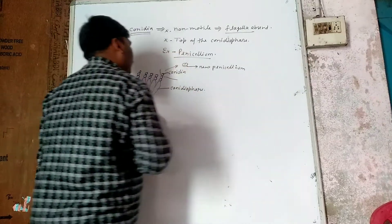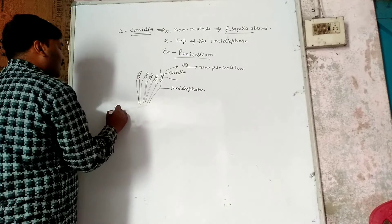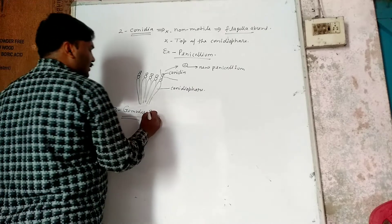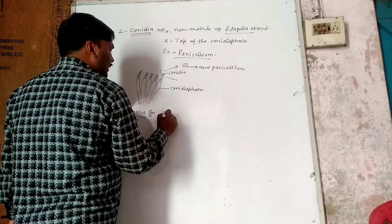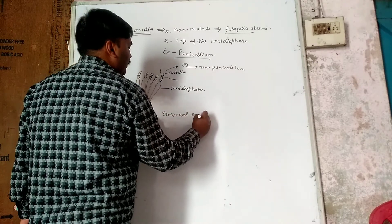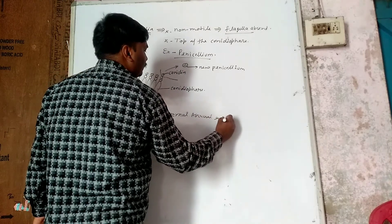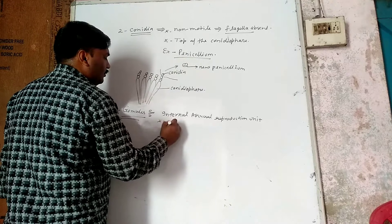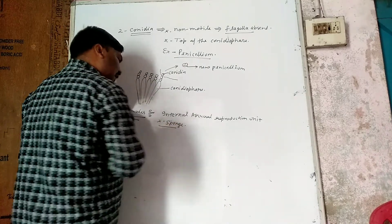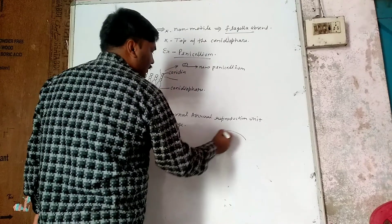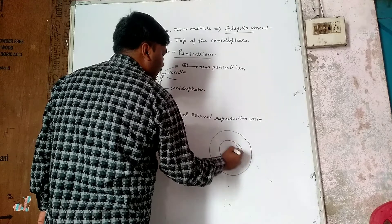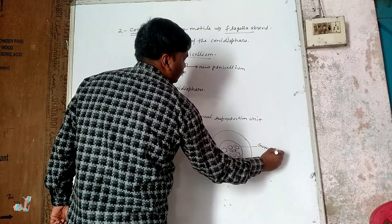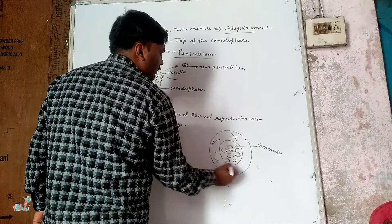So in the third class, we call it gemmule. Actually, in this case, we can say that it is an internal asexual reproduction unit. And in this case, it's present in sponges. We call it gemmule. For example, in this case, it gives you these segments.